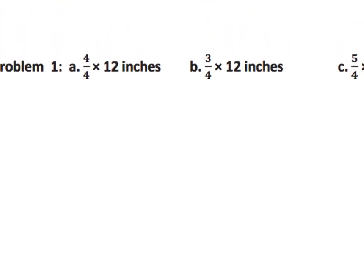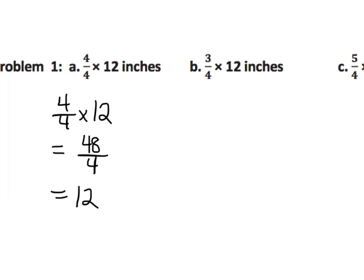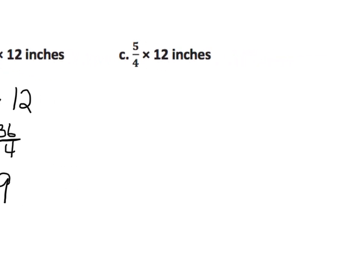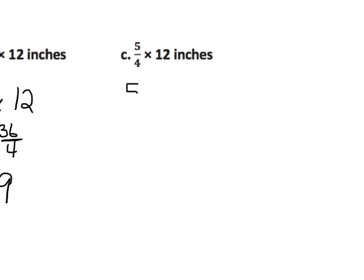Let's multiply 4 fourths times 12. That equals 48 fourths, and that equals 12. So when you start off by multiplying by 1, you get the same number — we started with 12 and ended up with 12. Now let's see what happens if we multiply by 3 quarters: 3 fourths times 12 equals 36 fourths, which equals 9. And then 5 fourths times 12 equals 60 over 4, which equals 15.